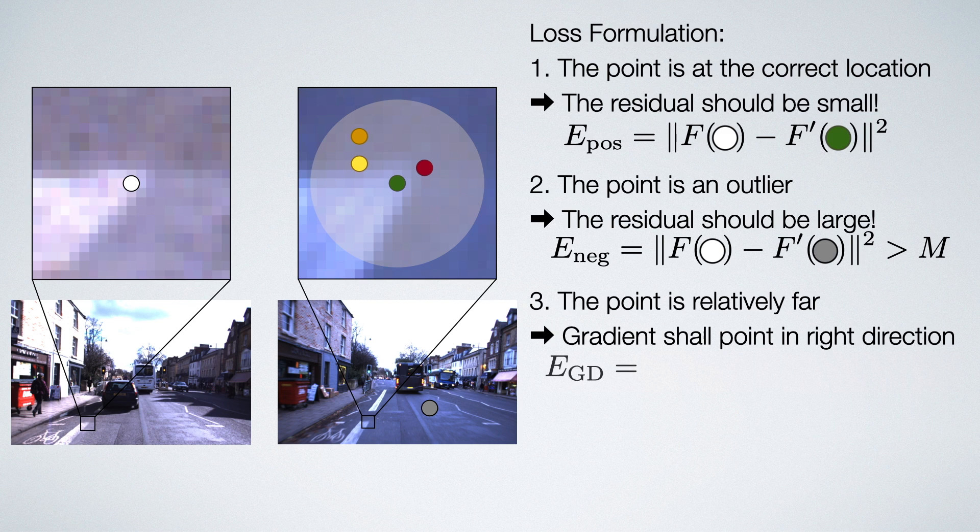Our loss function says that the distance to the correct solution after the update should be smaller than the distance before the update minus some delta. This means that we made progress.